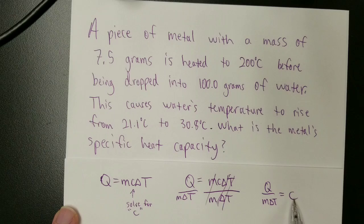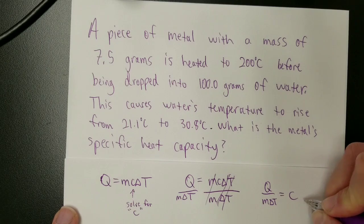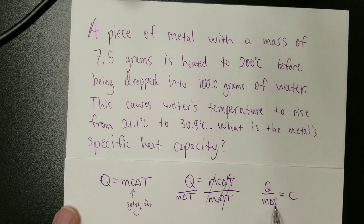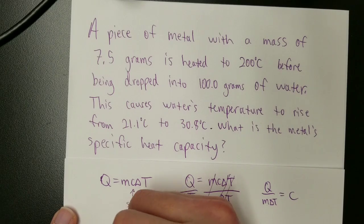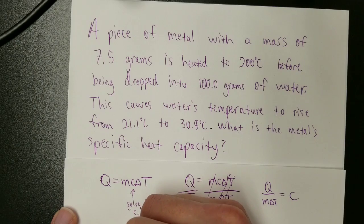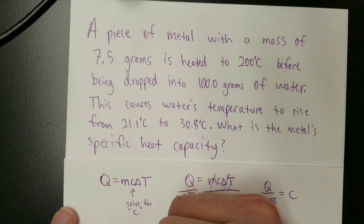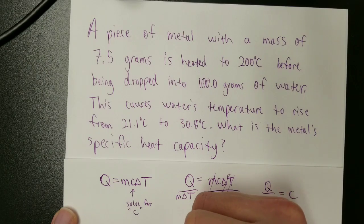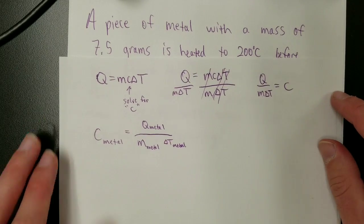Thus, I can find specific heat capacity by having Q, energy, divided by mass times the change in temperature. Now, if this is specific heat of the metal, then this must be energy of the metal, mass of the metal, delta T of the metal. So C of metal equals Q of metal over mass of metal times delta T of metal.